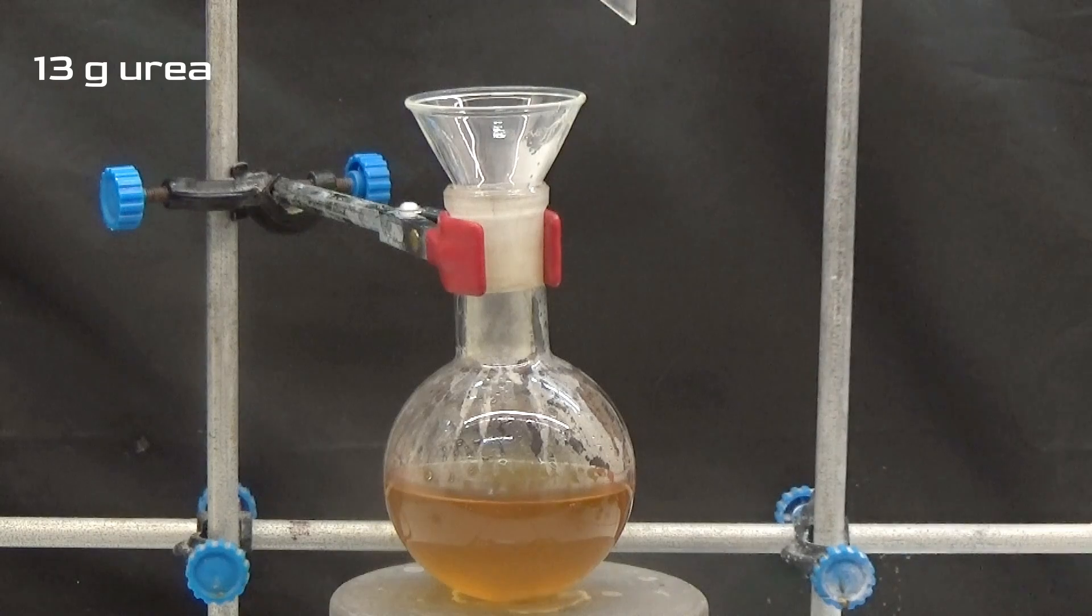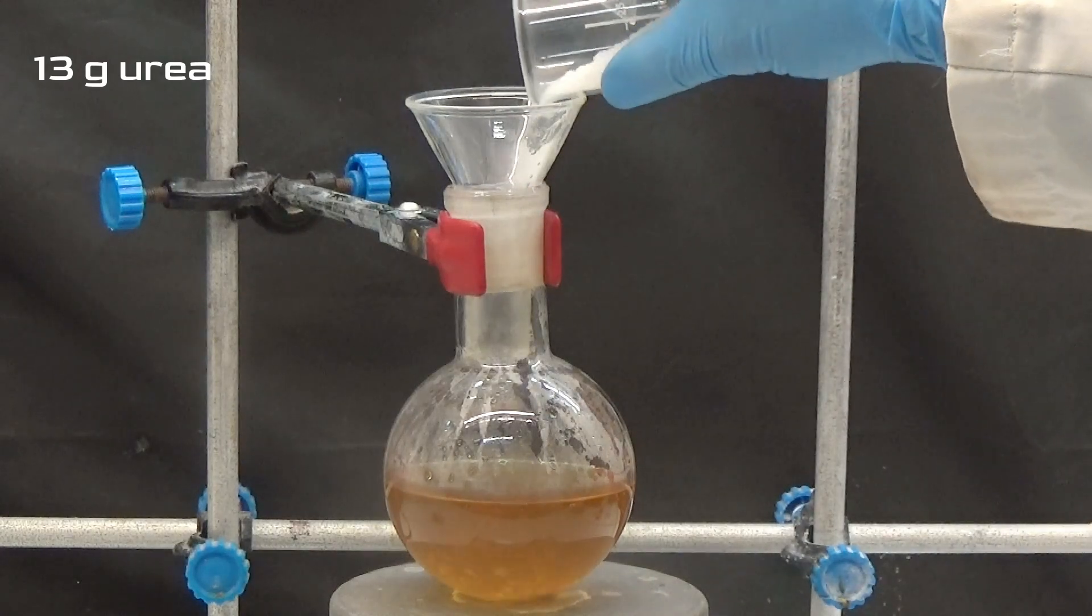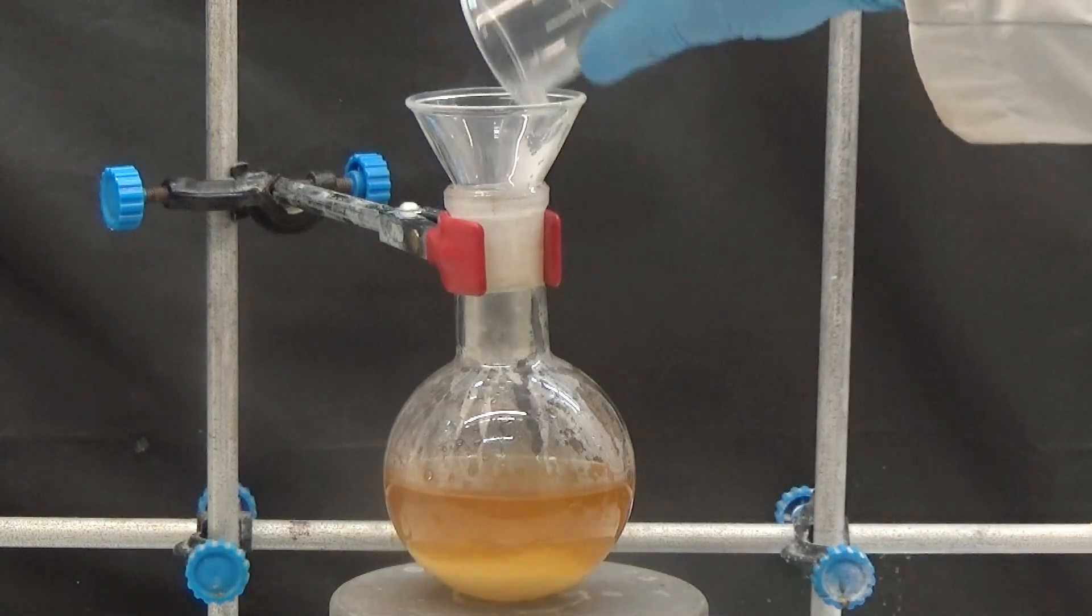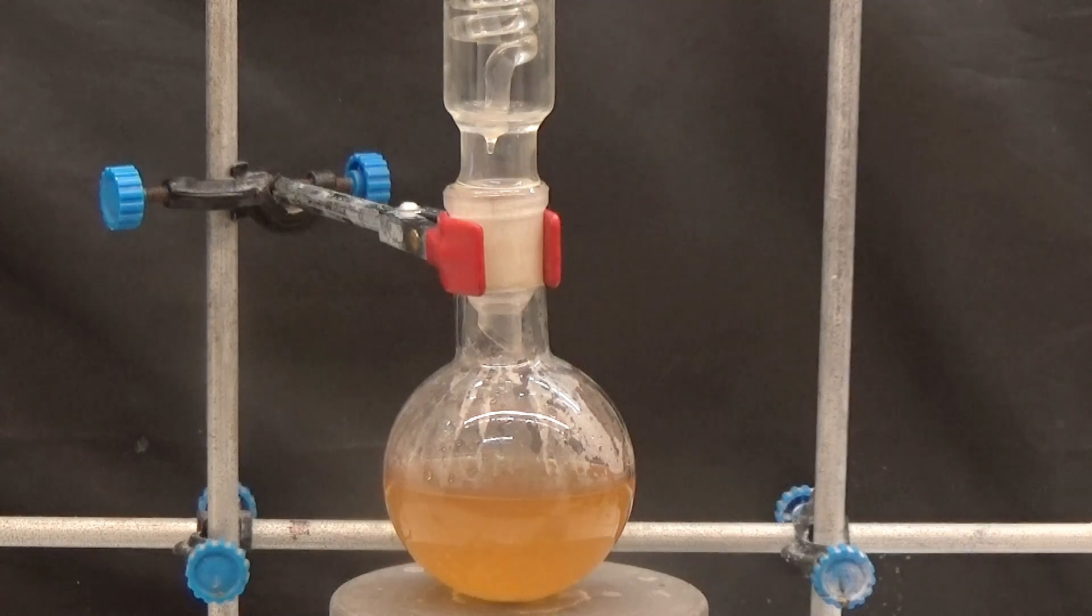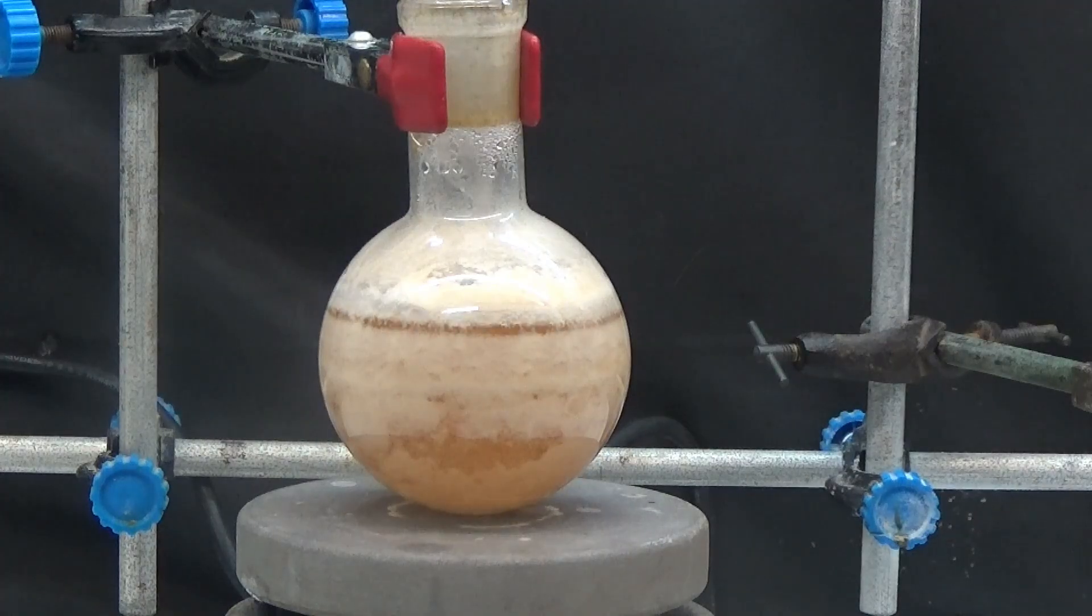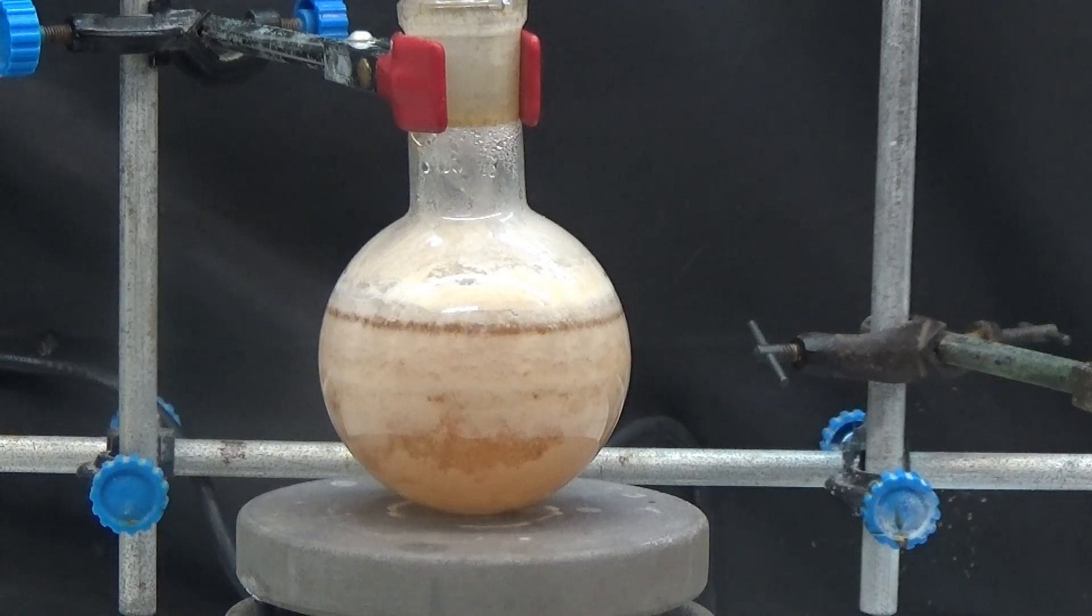Add 13 grams of urea after the hydrochloride is formed. Boil at reflux for 2 hours. The initial crystals of diphenylurea appear after 30 minutes of boiling.